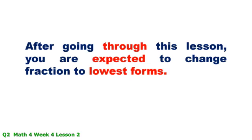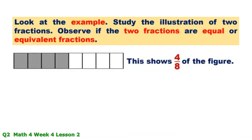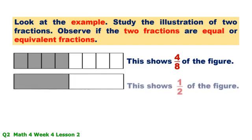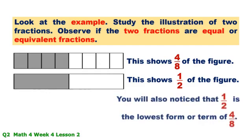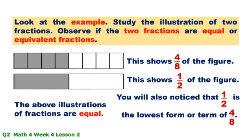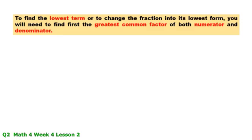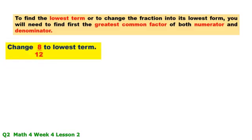After going through this lesson, you are expected to change fractions to lowest forms. Look at the example — study the illustration of two fractions and observe if the two fractions are equivalent. This shows four-eighths of the figure, and this shows one-half of the figure. One-half is the lowest form or term of four-eighths. The above illustrations of fractions are equal. To find the lowest term, you need to find the greatest common factor of both numerator and denominator.